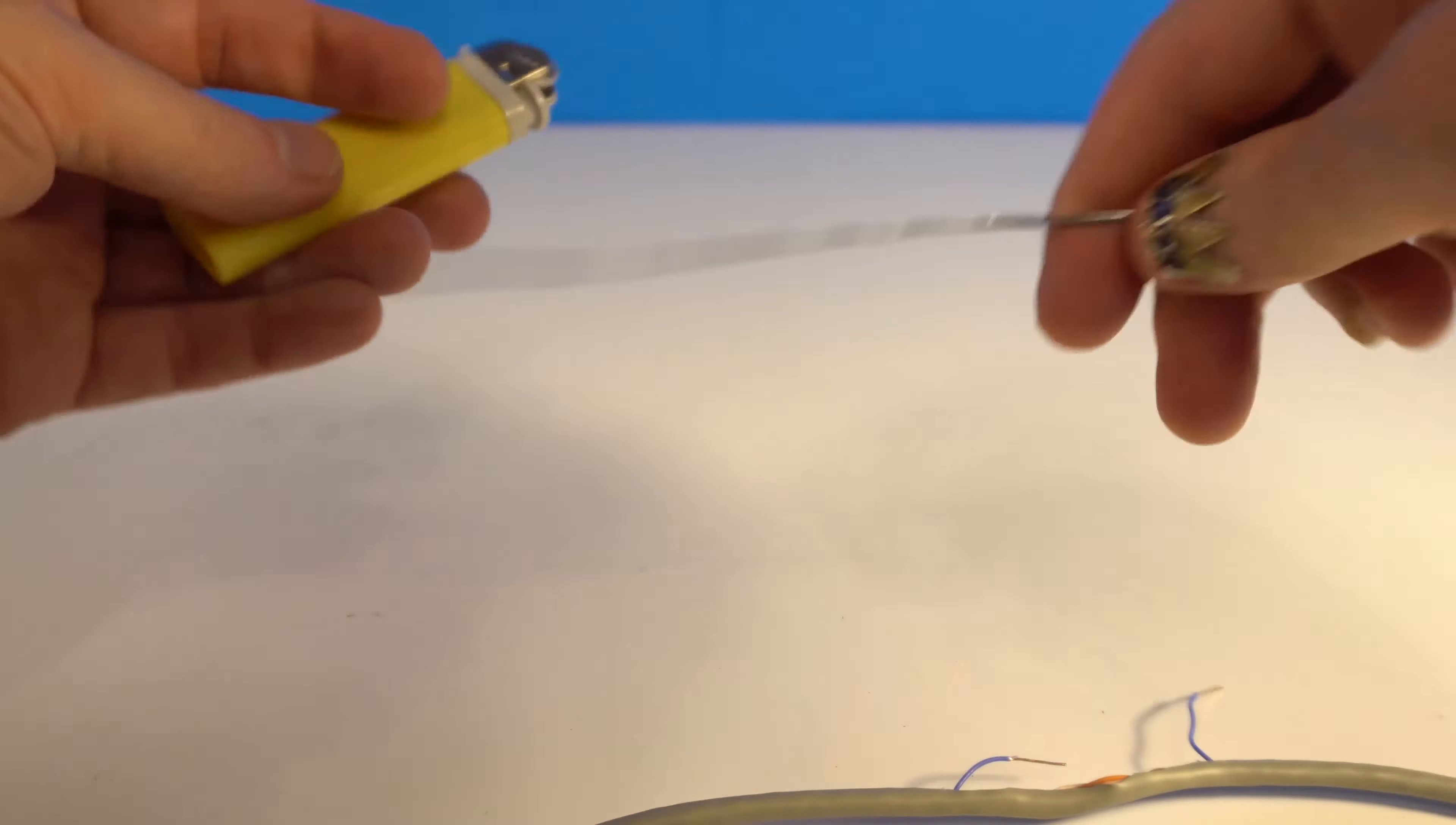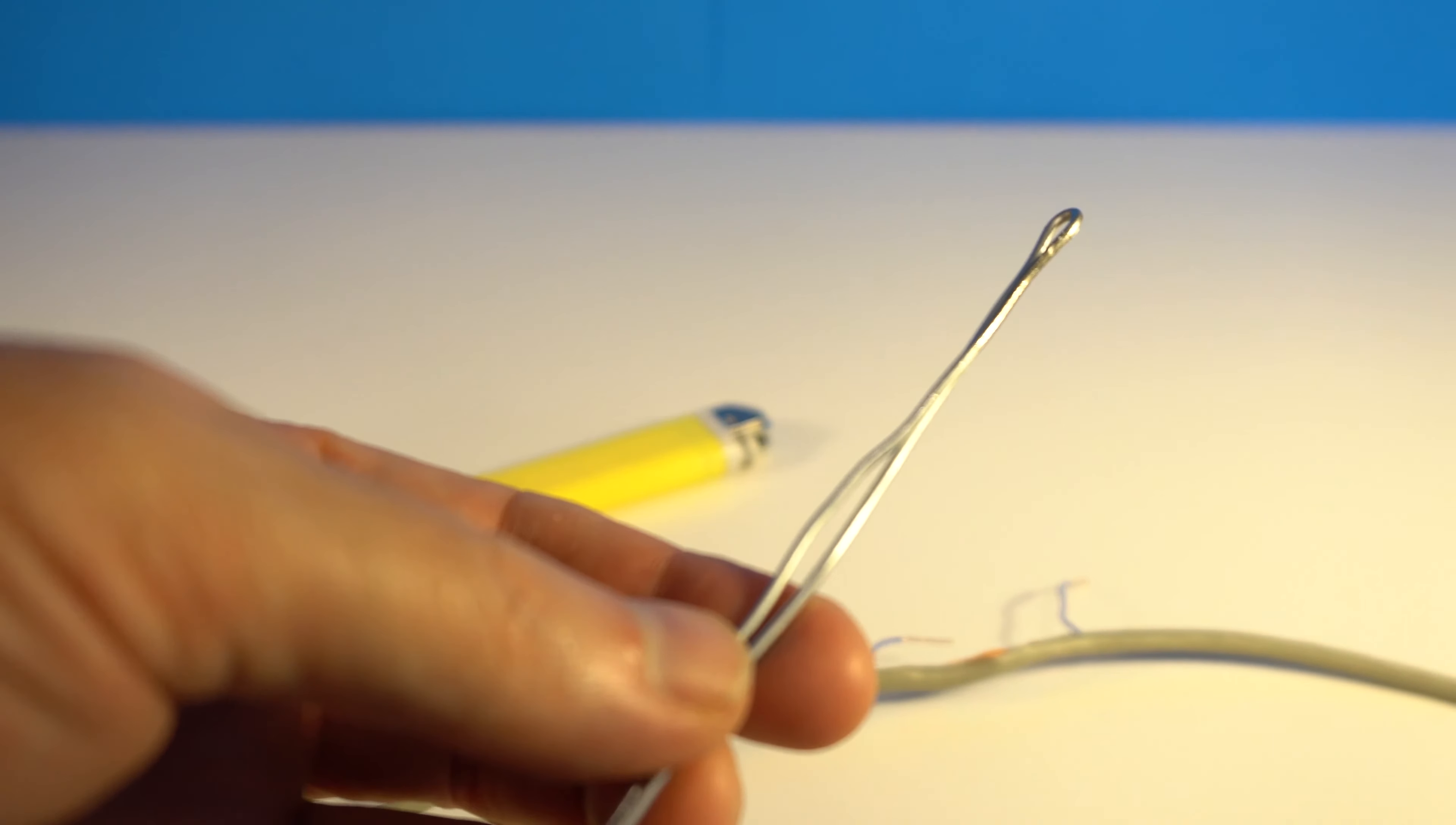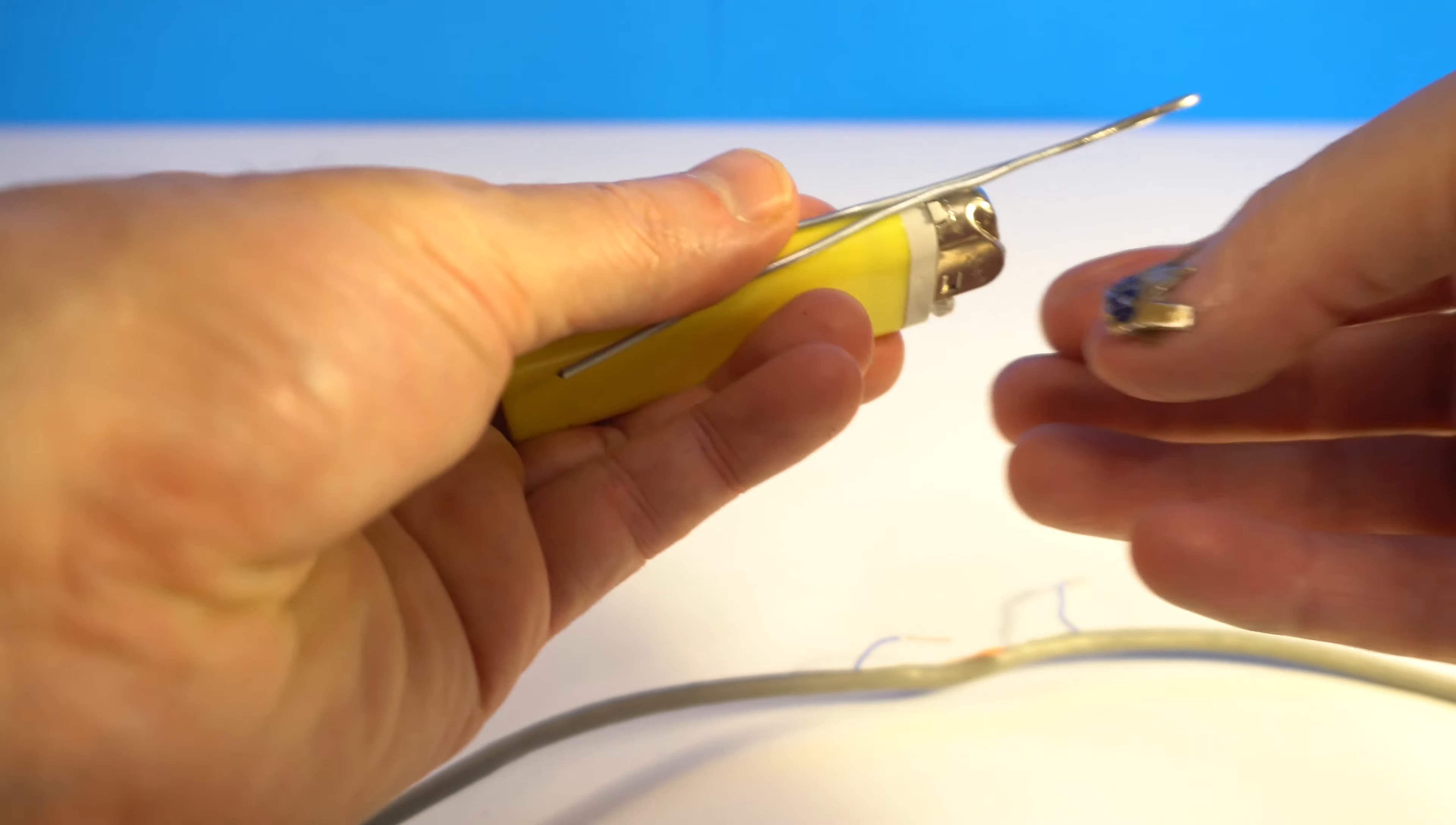Next I will create a device for soldering. This is very easy. Just heat the pliers, then I need to fix it here like this.